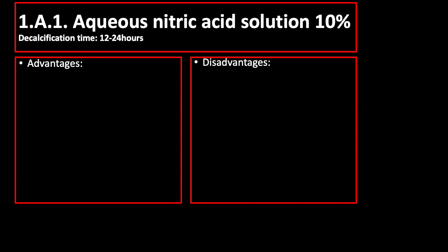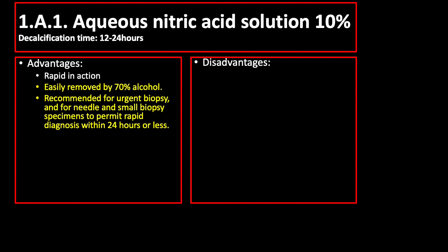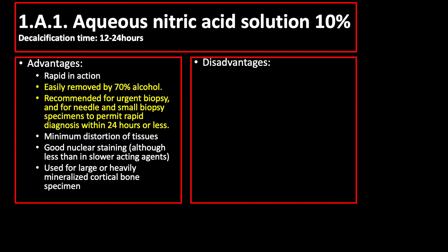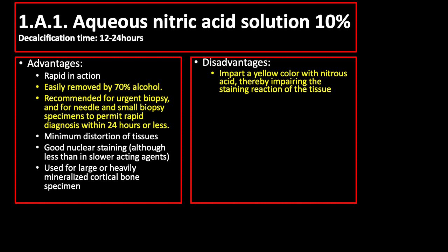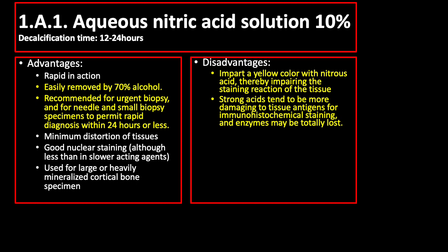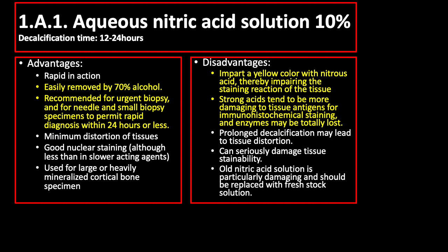Accus nitric acid solution 10% has a decalcification time of 12 to 24 hours. Advantages include rapid action, easily removed by 70% alcohol, and recommended for urgent biopsy and for needle and small biopsy specimens to permit rapid diagnosis within 24 hours or less. Disadvantages include that it imparts a yellow color with nitrous acid, thereby impairing the staining reaction of the tissue, and strong acids tend to be more damaging to tissue antigens for immunohistochemical staining — enzymes may be totally lost.